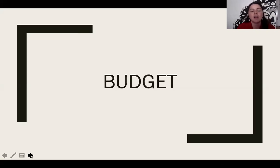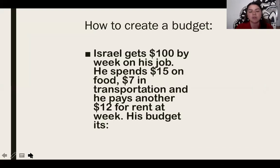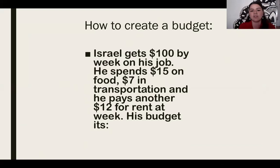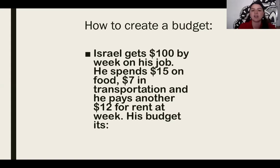On the activity that I sent you in the calendars, you have a problem to solve. I will teach you how to do it with a different problem, but it's almost the same — only the quantities change. How to create a budget: this is a weekly budget. Israel gets $100 per week from his job. He spends $15 on food, $7 on transportation, and pays $12 for rent per week. And we can create a budget like this.